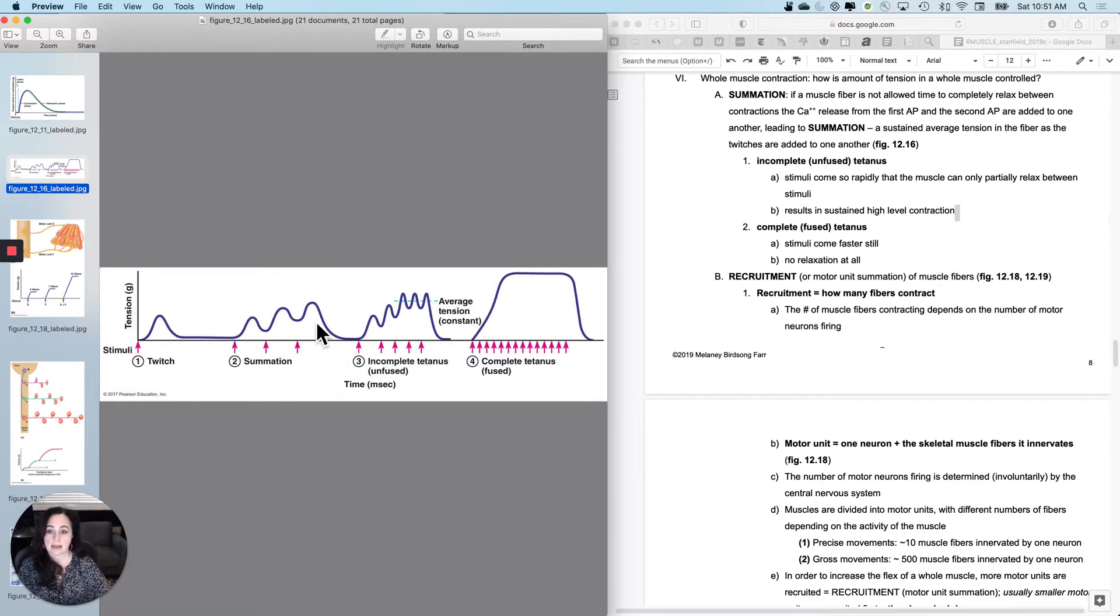This is a sustained average tension that I get as the twitches are added to one another. And if I stimulate it frequently enough, I can get this average tension that stays constant and relatively high. You won't notice the difference. The average tension is relatively constant. This is called incomplete or unfused tetanus, and it results in a high sustained level of contraction.